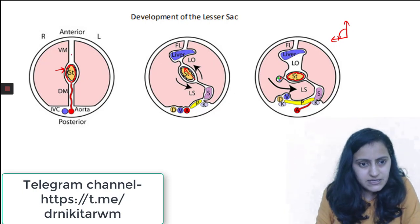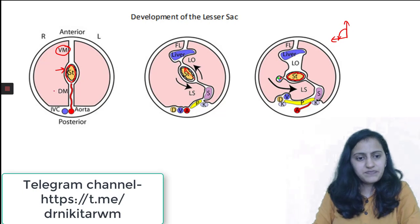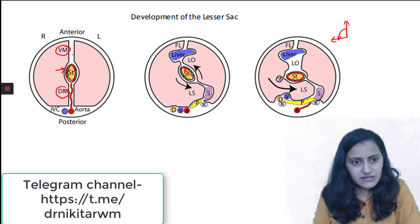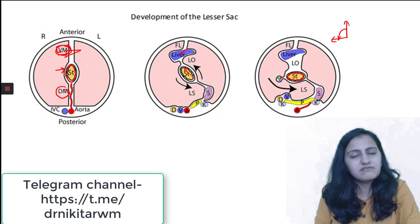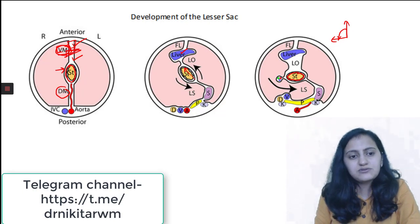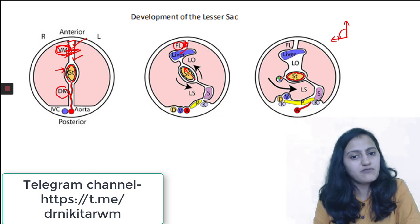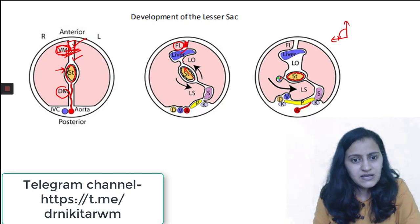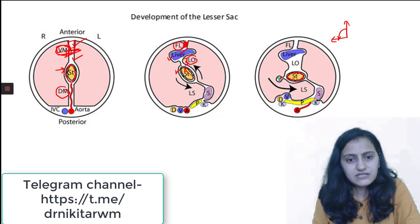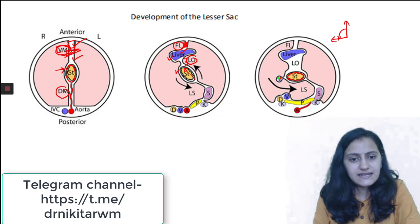Here you have the stomach. Anterior to it is called the ventral mesentery or ventral mesogastrium. Posterior to it is the dorsal mesentery or dorsal mesogastrium. In the ventral mesentery, the liver is forming. So the ventral mesentery is divided into anterior and posterior parts. The anterior part has the falciform ligament, and between the liver and the stomach — the posterior part — you have the lesser omentum, which is the gastro-hepatic ligament.